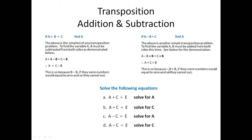This is so because minus b plus b, if there were numbers, would equal to zero, and so they would cancel out. This is just the reverse of the previous example — because that was plus b minus b, whereas this is minus b plus b. Once the variable is in front and is positive, you don't have to put a positive sign in front, because it is understood.